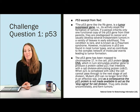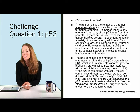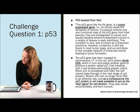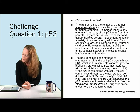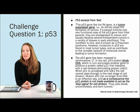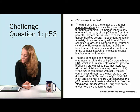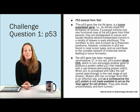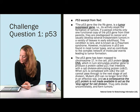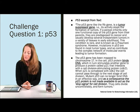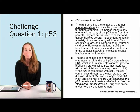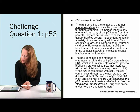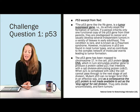Challenge question number one: P53. This excerpt describes P53 and comes from the National Center for Biotechnology Information. The P53 gene is a tumor suppressor — its activity stops the formation of tumors. If a person inherits only one functional copy of the P53 gene from their parents, they are predisposed to cancer and usually develop several independent tumors in a variety of tissues in early adulthood.